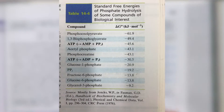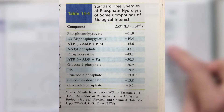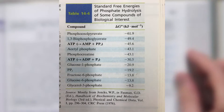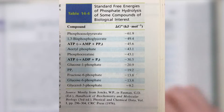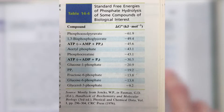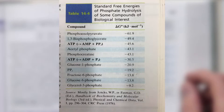We know that phosphoenolpyruvate contains a high-energy phosphate bond that can release a lot of energy upon hydrolysis. If we look in our book, phosphoenolpyruvate releases about 62 kilojoules per mole upon hydrolysis. This is significantly more than the energy released by the hydrolysis of ATP going to ADP, which is only about 31 kilojoules per mole.